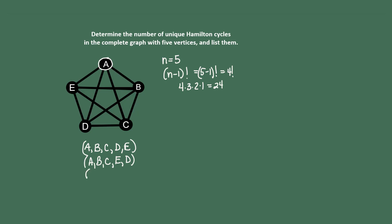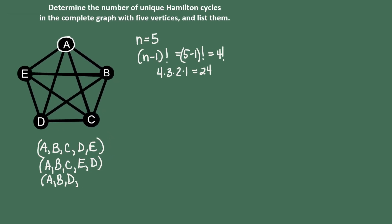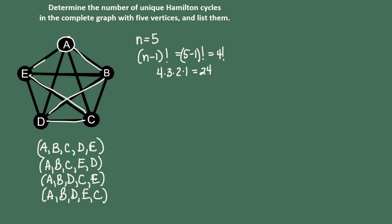We've exhausted all the possibilities for A, B, C, so now let's try A, B, D. We will never go back to having C in the third position, because we don't want to overcount. So from A→B→D, keeping alphabetical order of priority, we go to C then E, giving A→B→D→C→E→A. Or we could do A→B→D→E→C→A.